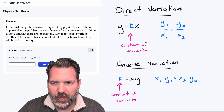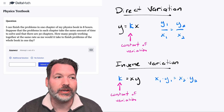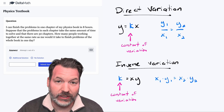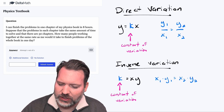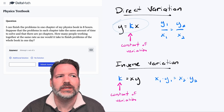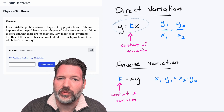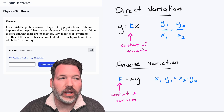Let's talk direct variation, inverse variation, and joint variation. Direct variation is simple enough — direct variation is usually what we mean by proportionality.